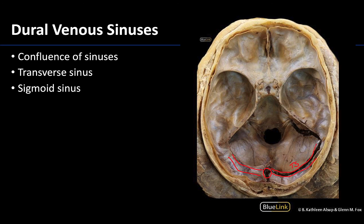At the level where we reach the petrous part of the temporal bone, the name changes to the sigmoid sinus — right about here where you get that sharp inferior turn, the name changes from transverse sinus to sigmoid sinus. The sigmoid sinuses, after picking up a smaller sinus along the way, head towards the jugular foramen in this general region. It is at the jugular foramen that the internal jugular vein begins and traverses the neck, and you can even see some of the cranial nerves heading towards the jugular foramen here.